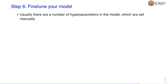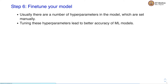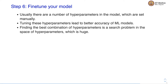Usually, there are a number of hyperparameters in machine learning models which are set manually by the machine learning model developer. Tuning these hyperparameters usually leads to better accuracy of machine learning models. However, finding the best combination of hyperparameters in a brute force manner is a challenging task. The hyperparameter space is huge and finding the best combination is a search problem in this huge parameter space.